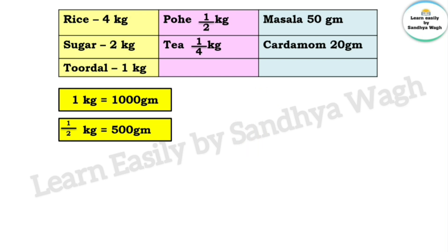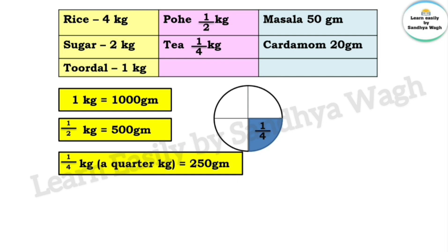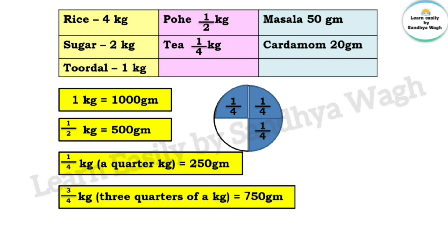Now, 1 quarter kilogram — how many grams will that be? If we divide 1 kg of sugar into 4 equal parts, 1 part is one-fourth, and one-fourth means a quarter part. So: 1 whole kg equals 1000 grams, half kg equals 500 grams, 1/4 kg equals 250 grams. And 3 quarters: 250 + 250 + 250 = 750 grams. So 3/4 kg equals 750 grams.